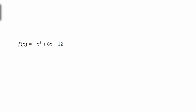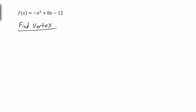Now I want to show an alternative approach using the same problem. Instead of completing the square to find the vertex, there's a formula. For a function in general form, you can find the x-coordinate of the vertex — the h value — using negative b over 2a. This is probably a little easier than rewriting in standard form.